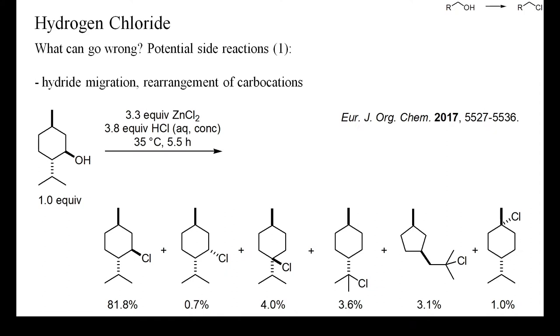So what are the potential side reactions? Many carbocations show a high tendency to isomerize by hydride migration or Wagner-Meerwein rearrangement. A careful analysis of the products formed upon deoxychlorinating menthol with aqueous hydrochloric acid revealed a large number of such carbocation-derived by-products.